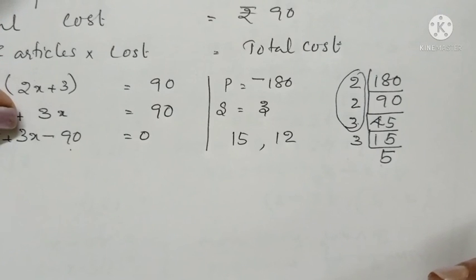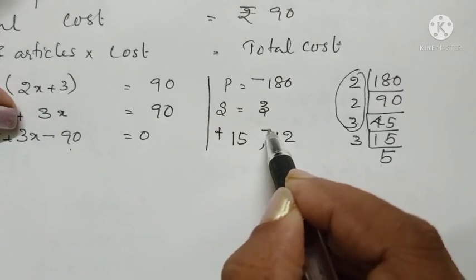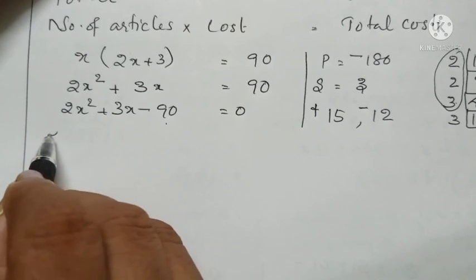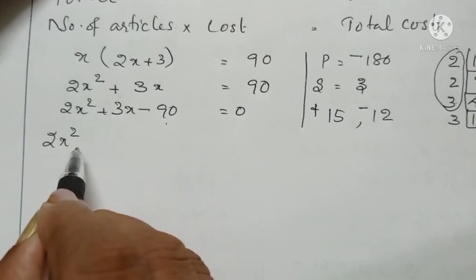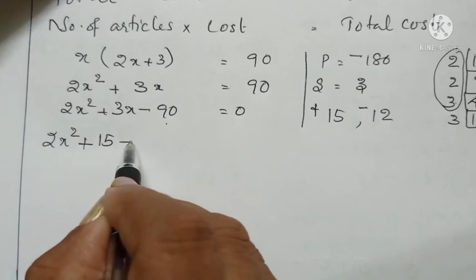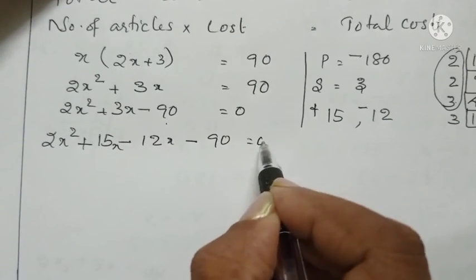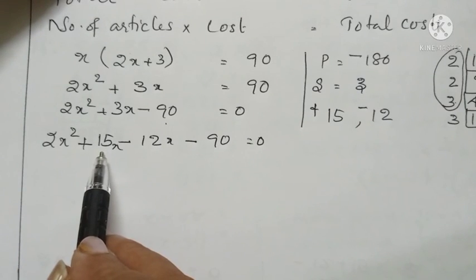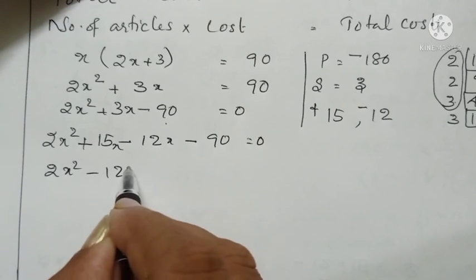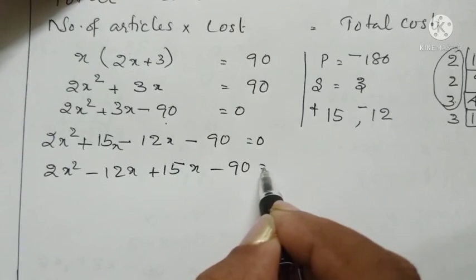Since the sum is positive 3, the bigger number is positive and the smaller number is negative. So we split: 2x squared plus 15x minus 12x minus 90 equals 0. Since 2x squared and 15x have no common factor, we interchange terms: 2x squared minus 12x plus 15x minus 90 equals 0.